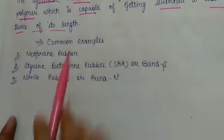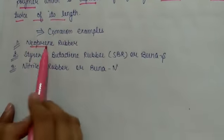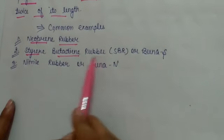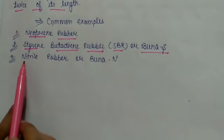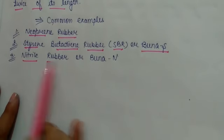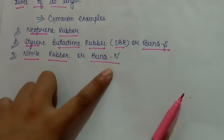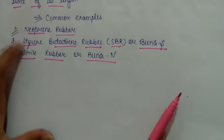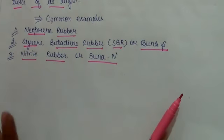Now synthetic rubber has some common examples: neoprene rubber, styrene butadiene rubber which is SBR or Buna-S rubber, and nitrile rubber or Buna-N. So first we'll discuss neoprene rubber.